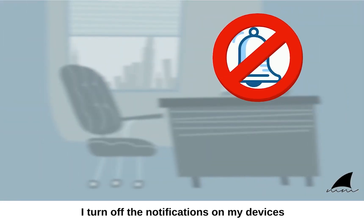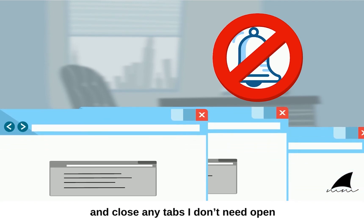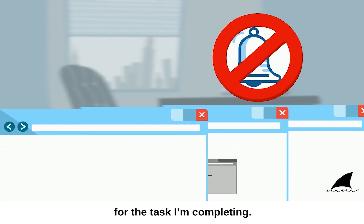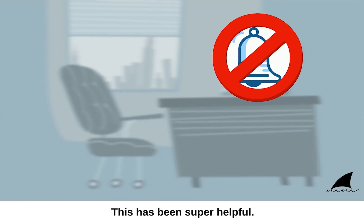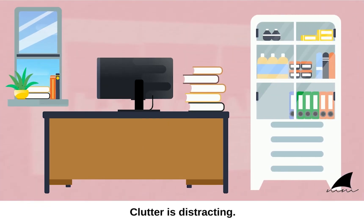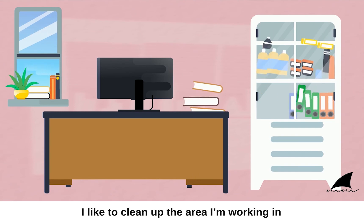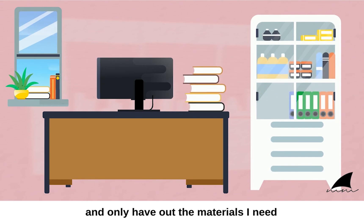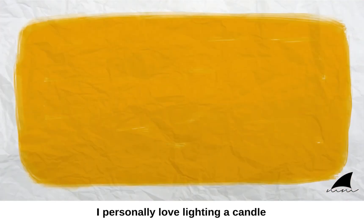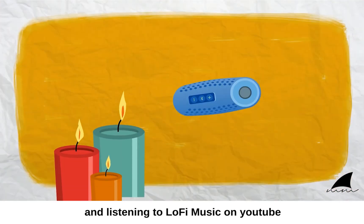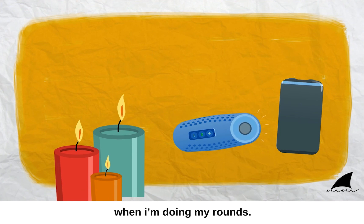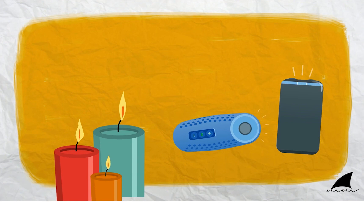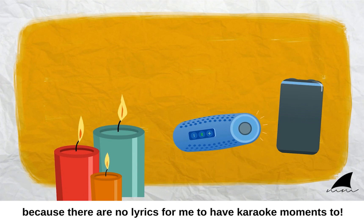I turn off the notifications on my devices and close any tabs I don't need open for the task I'm completing — this has been super helpful. I tidy up my work environment because clutter is distracting. I like to clean up the area I'm working in and only have out the materials I need to successfully carry out my round. I personally love lighting a candle and listening to lo-fi music on YouTube when I'm doing my rounds. They are really chill beats that help me get into a good groove because there are no lyrics for me to have a karaoke moment to.